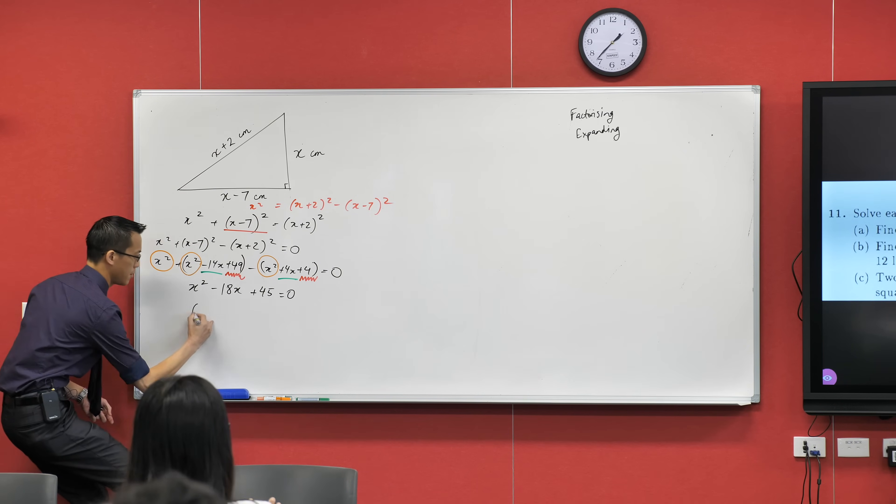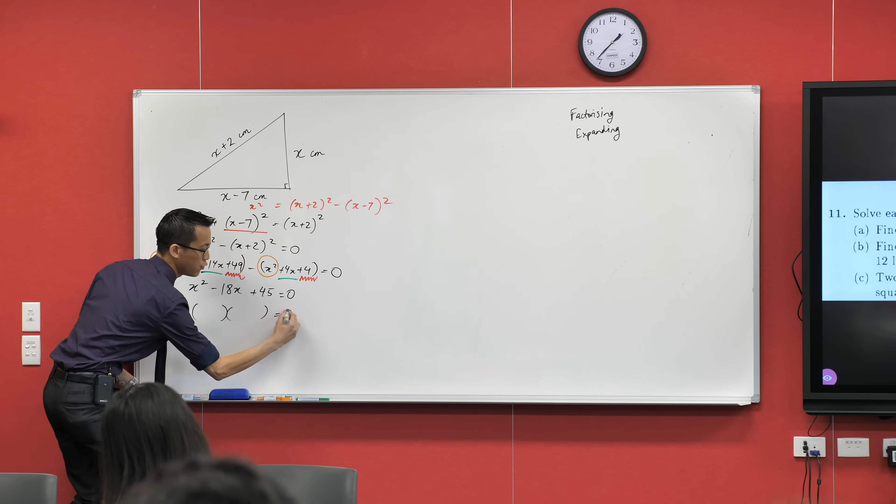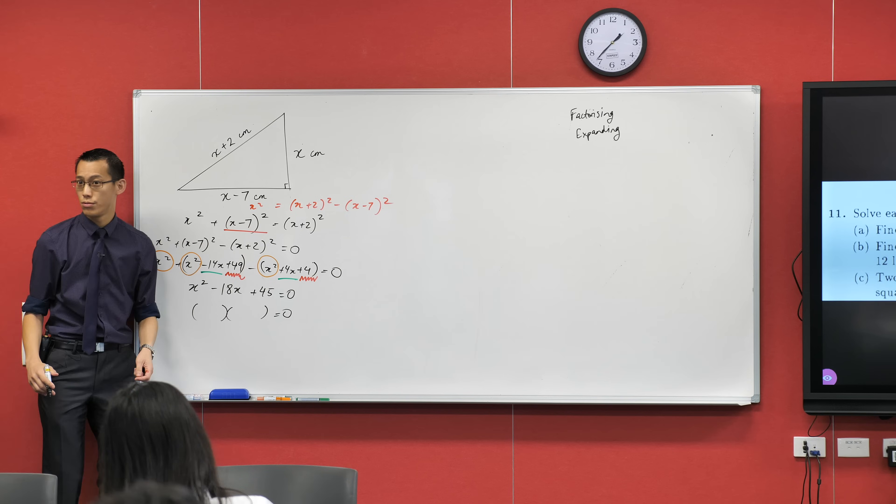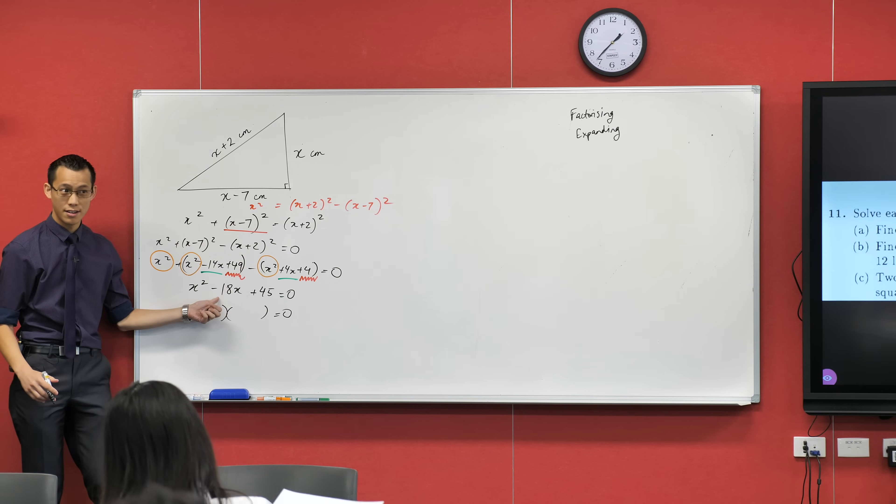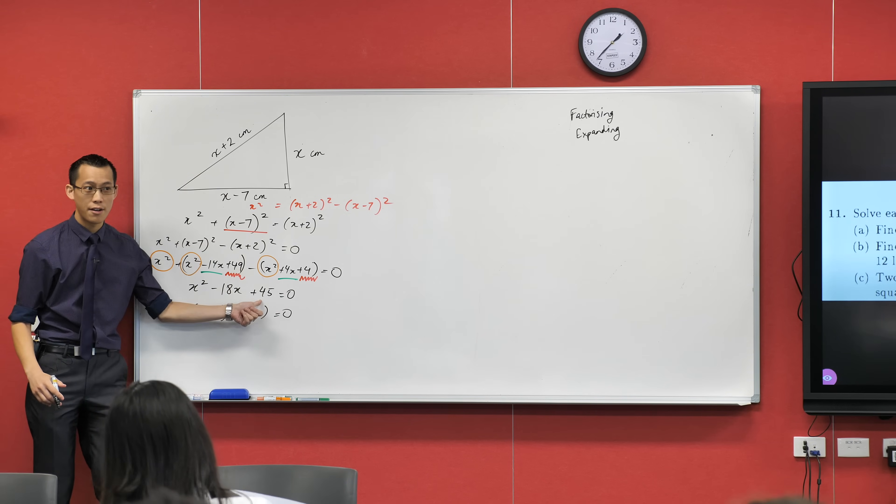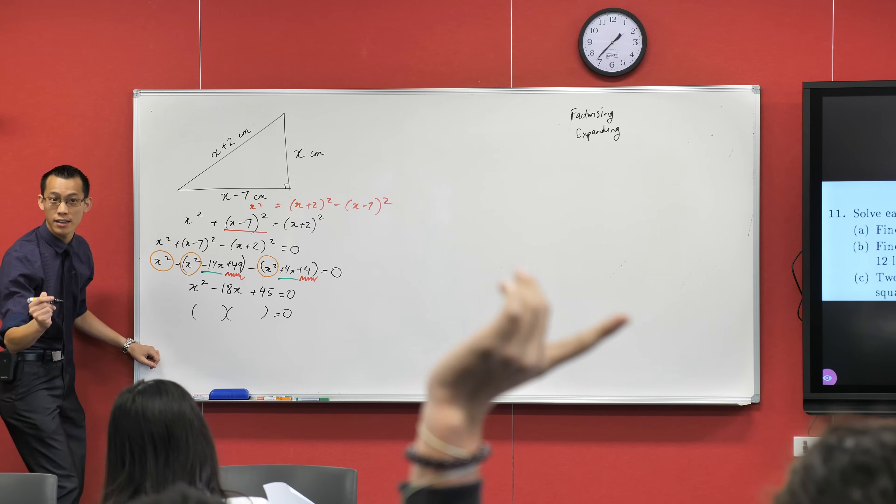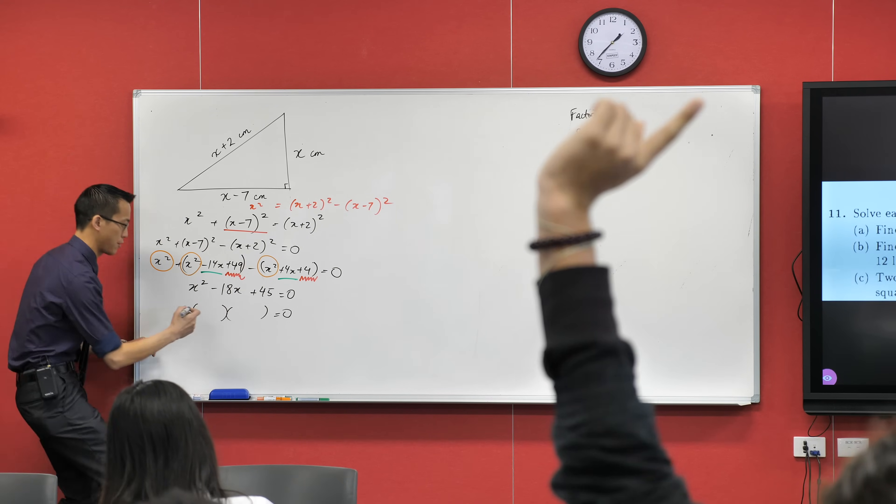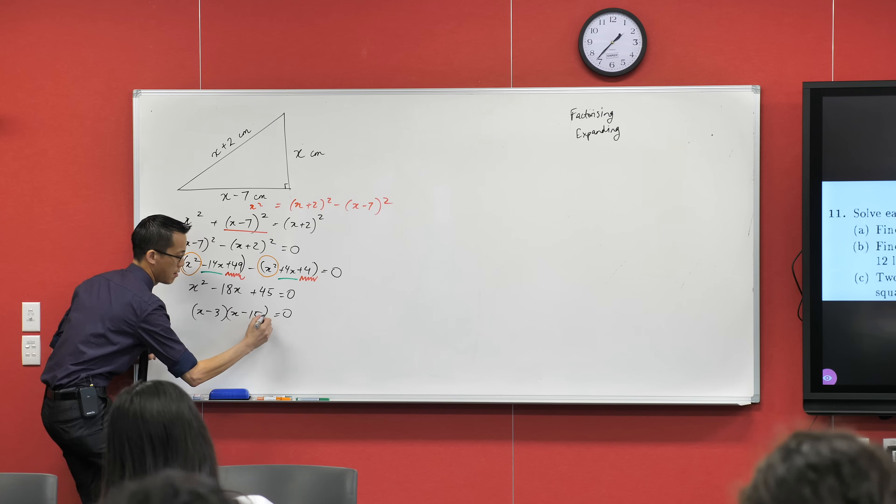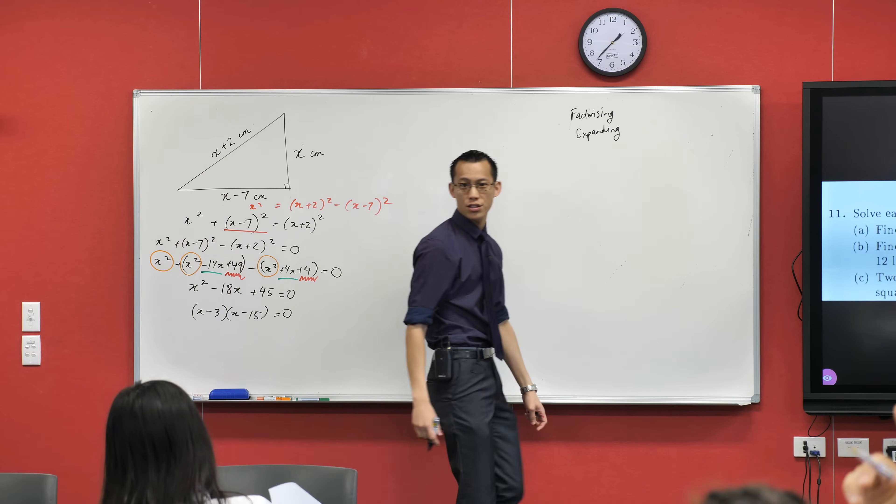Think for me of a pair of numbers, and we want to add to negative 18. We want to multiply to 45. Do you have the pair of numbers? Minus 15, minus 3. So these are pretty big numbers. There's my minus 15 and my minus 3.